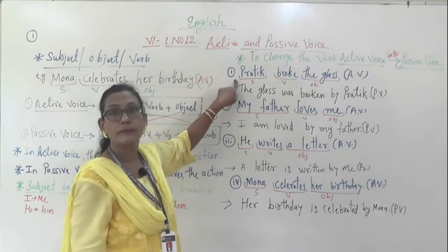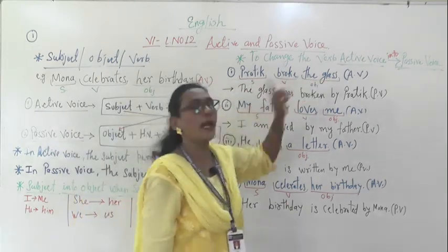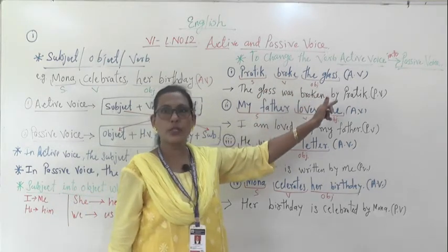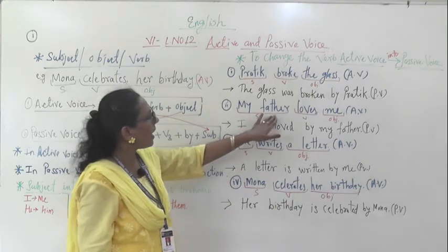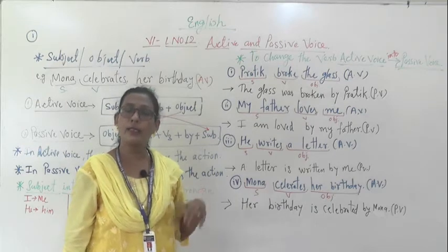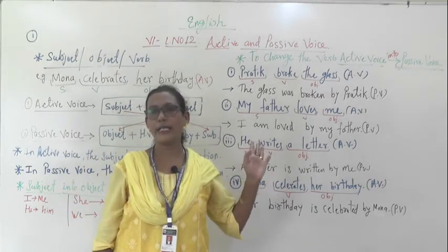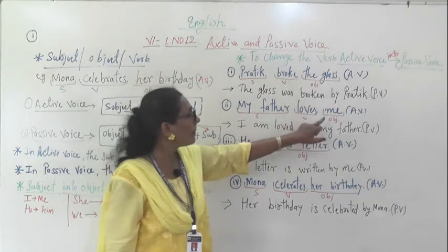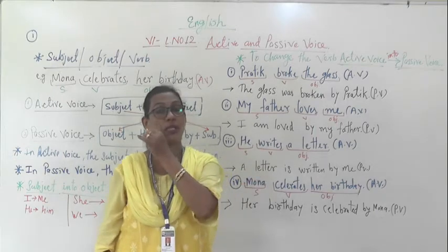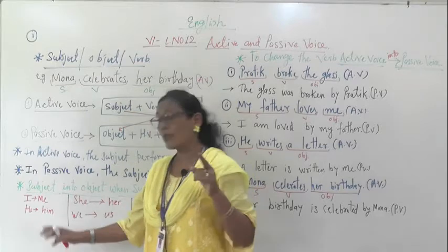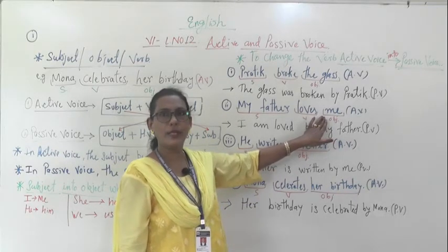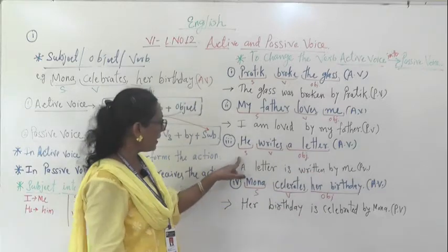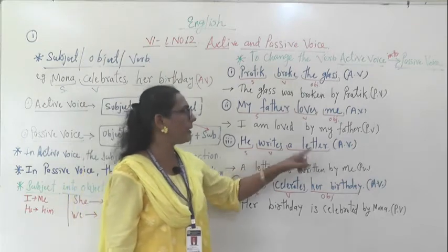Now let's change active voice sentences into passive voice. First, identify subject, verb, and object. Sentence 1: 'Pratik broke the glass.' Pratik is subject, 'broke' is verb, 'the glass' is object. Sentence 2: 'My father loves me.' My father is subject, 'loves' is verb, 'me' is object. Sentence 3: 'He writes a letter.' He is subject, 'writes' is verb, 'a letter' is object.